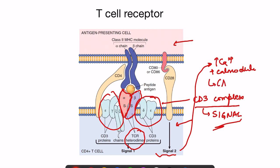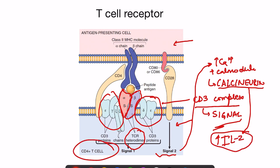When both signals arrive, similar to hormone receptor mechanisms, there is phosphorylation/dephosphorylation inside the cell, ultimately leading to increased calcium levels. Calcium binds with calmodulin, causing activation of calcineurin, which in turn activates a transcription factor that increases production of interleukin-2. Drugs like cyclosporine and tacrolimus block calcineurin and hence block IL-2 production — this is the basis of their immunosuppressive action.